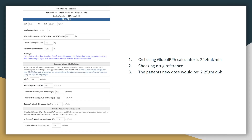So that's what their new dose will be — 2.25 grams Q6 hours. You'll either adjust it per your hospital's approved protocol, or you could call the physician and let them know that the patient's renal function isn't that good and that the dose should be 2.25 grams Q6, and hopefully they will agree to that.